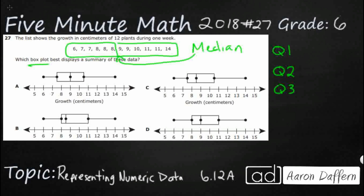The number directly to the left is 8 and the number directly to the right is 9. If those happen to be the same numbers, then it's simple — it would just be that number. But since those are different numbers, we need to find the number exactly between 8 and 9, which is going to be 8.5. So sometimes you'll have to represent numbers that aren't even in the data set. Our median is actually going to be our Q2 — our second quartile — and that's going to be 8.5.